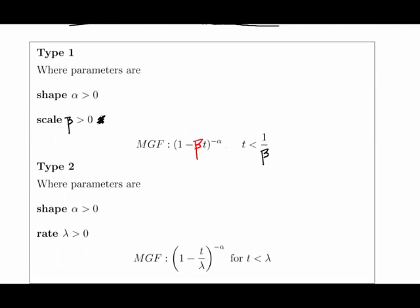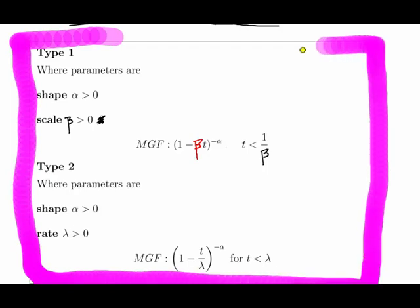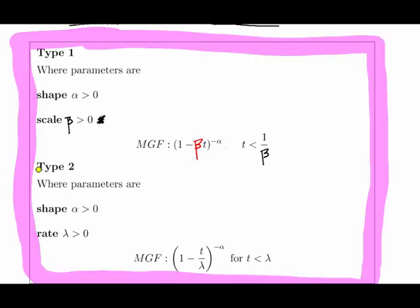There's two ways of specifying the gamma distribution here. I'll be very clear that we're actually using the second type, which is using the shape parameter and the rate parameter, so alpha and lambda.